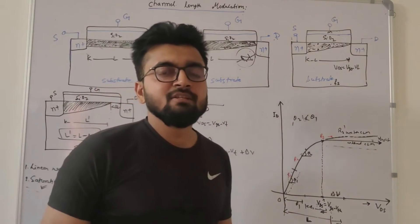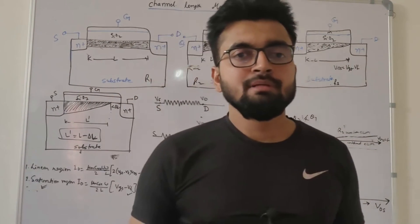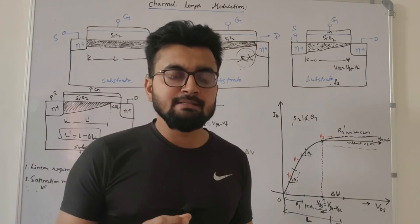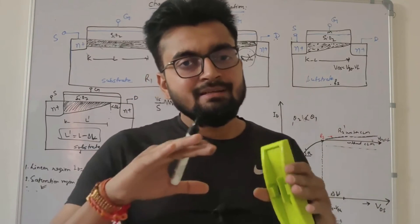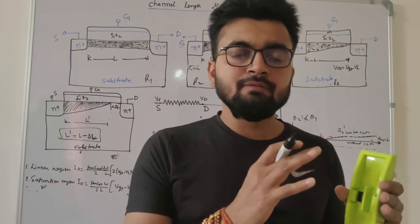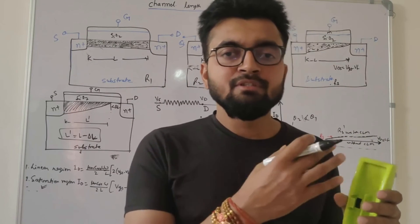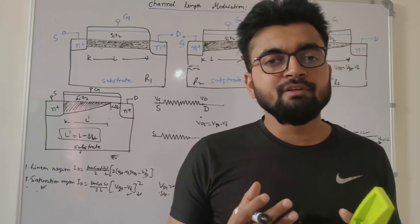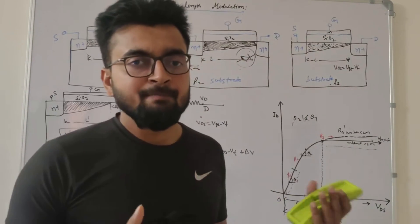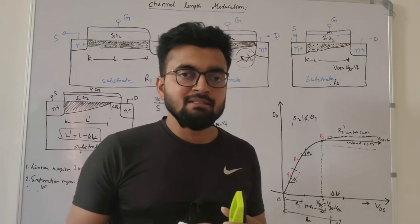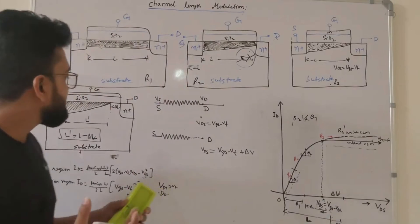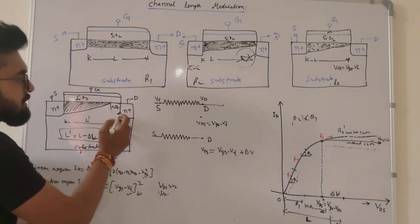To mitigate the effect of channel length modulation, we can use the FinFET structure. In a FinFET, the gate is wrapped around the channel, giving the gate wider control over the current flow from source to drain. Thereby a FinFET structure can mitigate second-order effects like channel length modulation in devices.